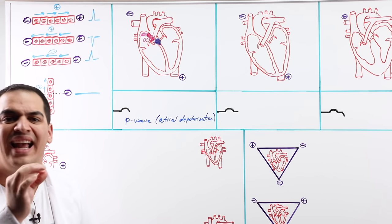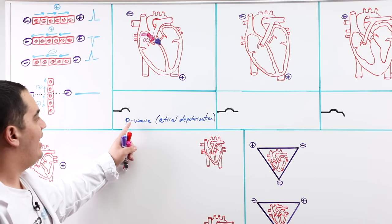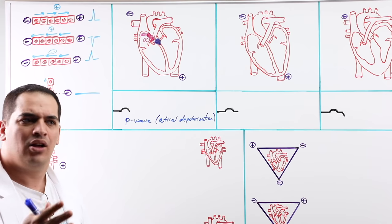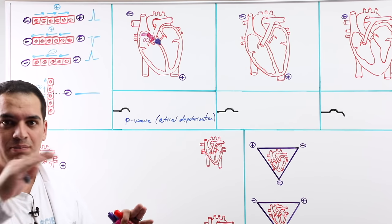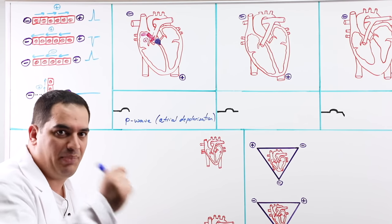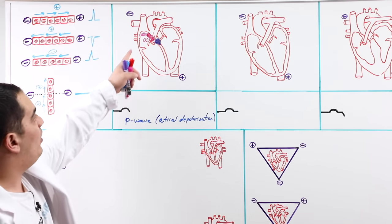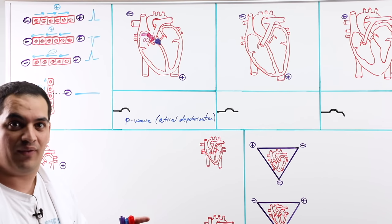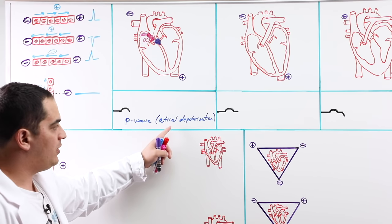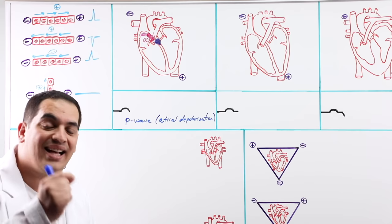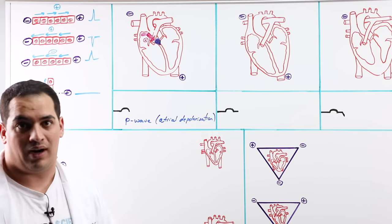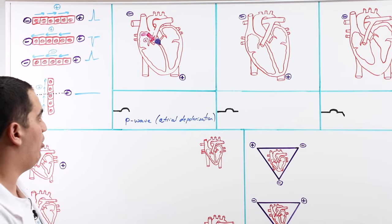More specifically, if the P wave looks the way it's supposed to — a sinus P wave — that means it was generated by the SA node. If you have an upright P wave with consistent morphology, that atrial depolarization occurred because the SA node generated the electrical activity to depolarize the entire atria.